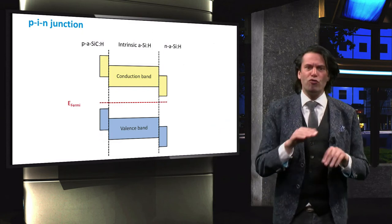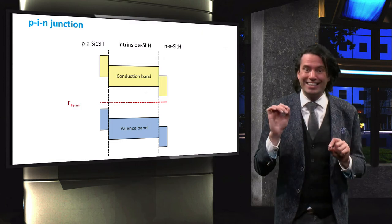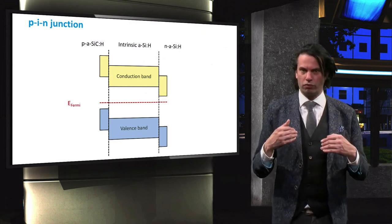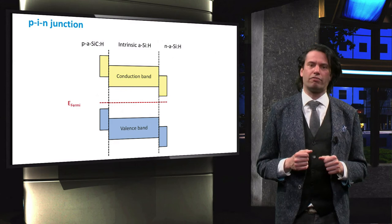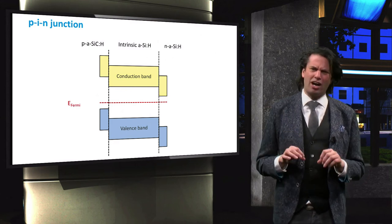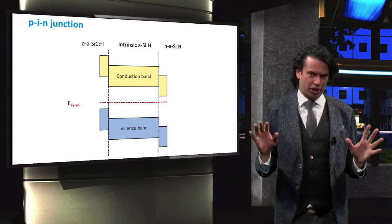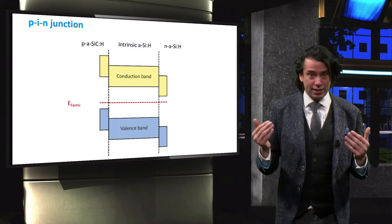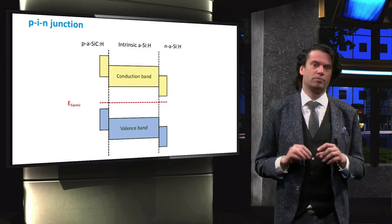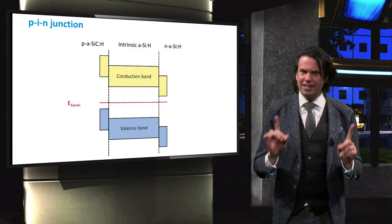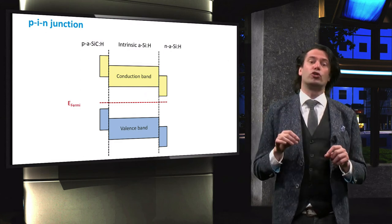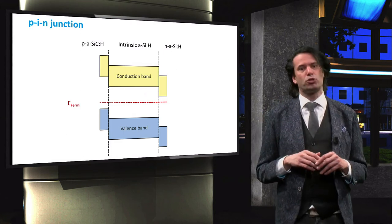This creates a slope over the electronic bands in the intrinsic film, which reflects the built-in electric field. Note that there are no majority or minority charge carriers in the absorber layer, since the intrinsic layer is un-doped. Drift is therefore solely responsible for charge carrier transport in the absorber layer.